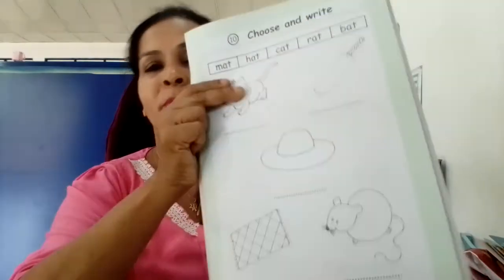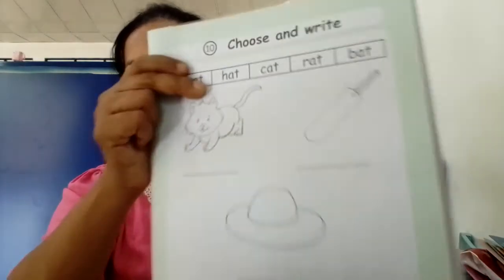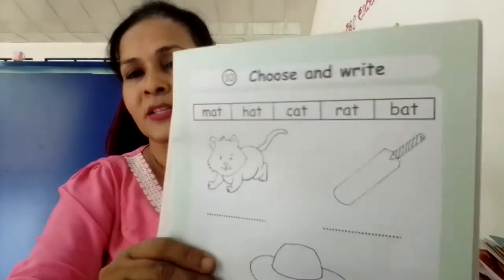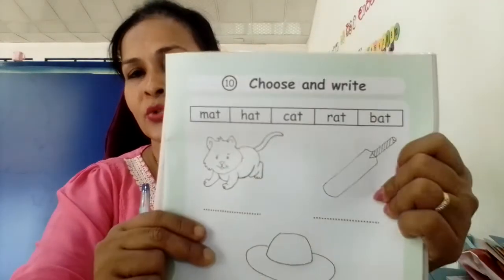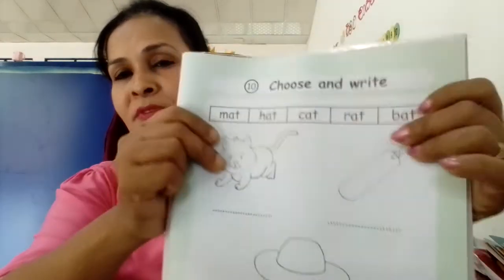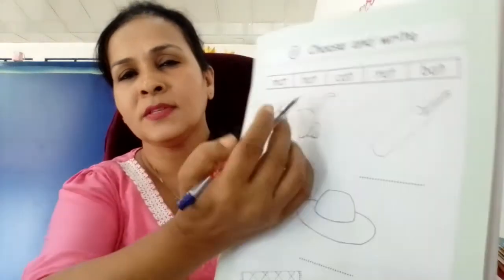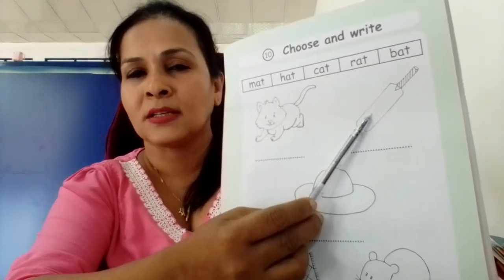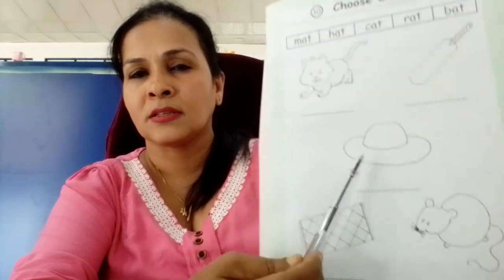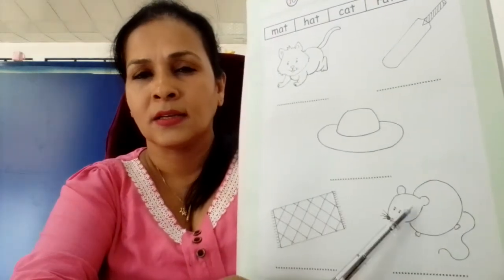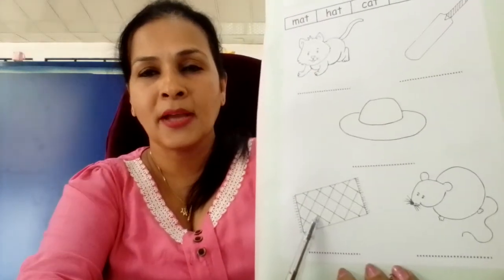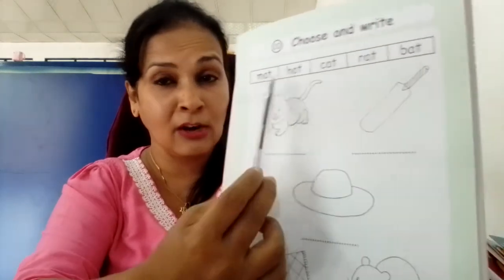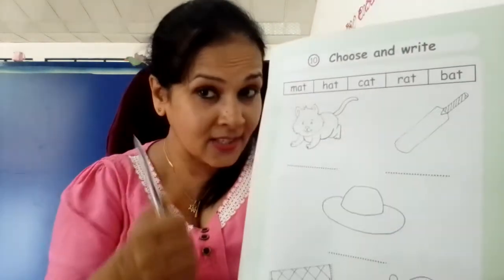Then come to this page. You should choose what is the correct word — the real word. Now see, what is this picture? Bat, cat, hat, rat, mat. I think if you can write these words without looking, excellent.